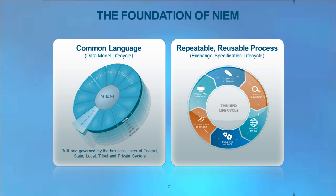The petal-like objects that extend from NIEM core represent these domains. There are currently 15 such NIEM domains defined. A standardized process for developing exchanges and new domains is repeated and reused throughout all NIEM communities.